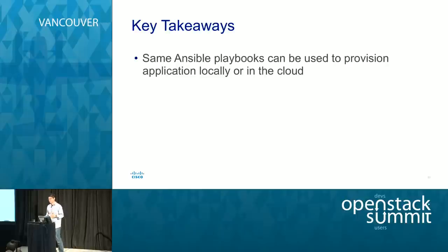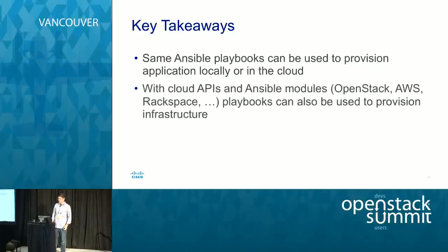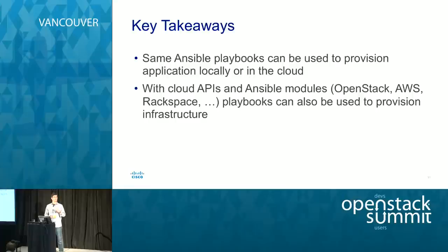The key takeaways: you just saw me do this locally using Vagrant. Using the same Ansible playbooks, I can do this against any set of machines — either virtual or real — as long as I have network access and SSH access. That's super powerful. And with these cloud APIs — OpenStack, AWS, Rackspace — you can also use Ansible to provision your infrastructure, which is pretty cool as well.